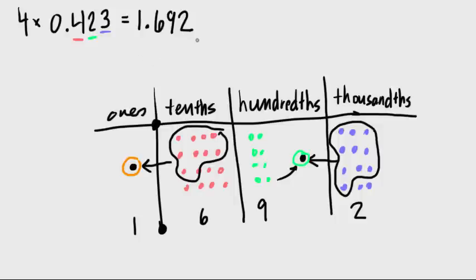So we have nine. And then we've again, we bundled these up to make 100. So we only have two here. So the answer is 1.692. Okay, so one and six hundred and ninety two thousandths. That's how we would do that one.